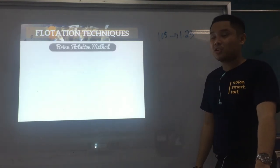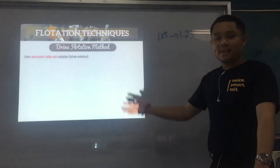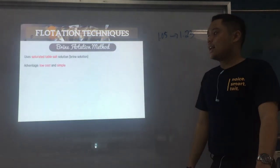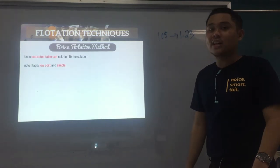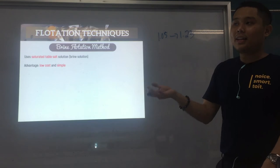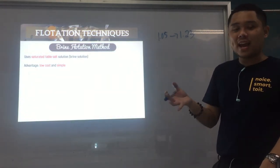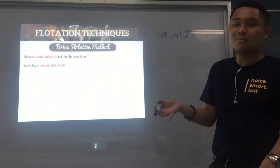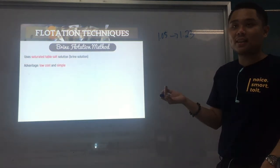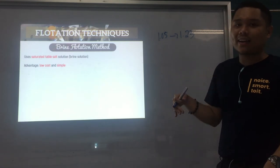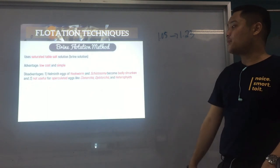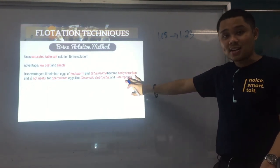We start with the first method: the brine flotation method. By the name itself, you use saturated table salt solution or brine solution. The advantage is it's low cost and very simple — you can get this reagent from your kitchen. Disadvantages: helminth eggs of hookworm can shrink badly when exposed to the solution.